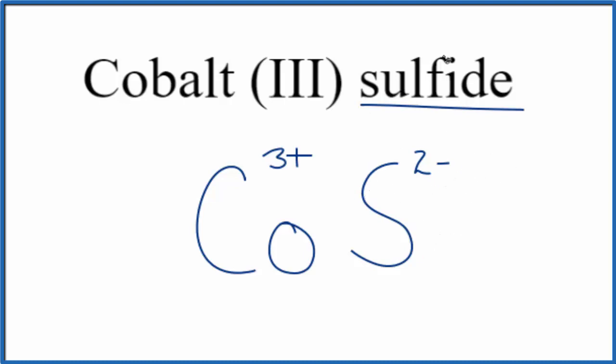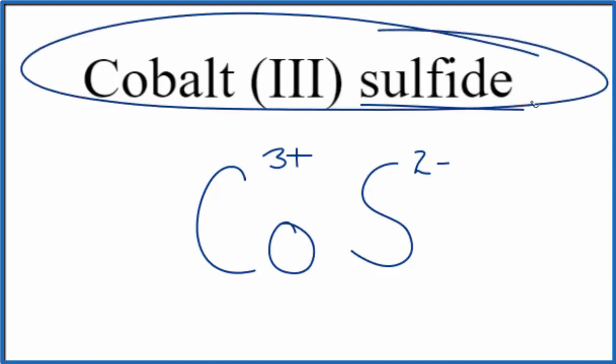So these need to add up to zero. Cobalt-3-sulfide is neutral, it doesn't say ion after the name. So these need to add up to zero, give us a net charge of zero.